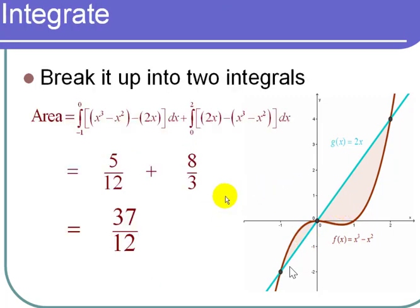So what I do is I add up the two integrals. The first integral is going to go from -1 to 0, and the top curve is the cubic x³ - x², the bottom curve is the line 2x. So I integrate the difference between the top curve and the bottom curve. For the right-hand side region, the top curve is now the line and the bottom curve is a cubic, so now I'm going to integrate from 0 to 2 of the top curve minus the bottom curve.